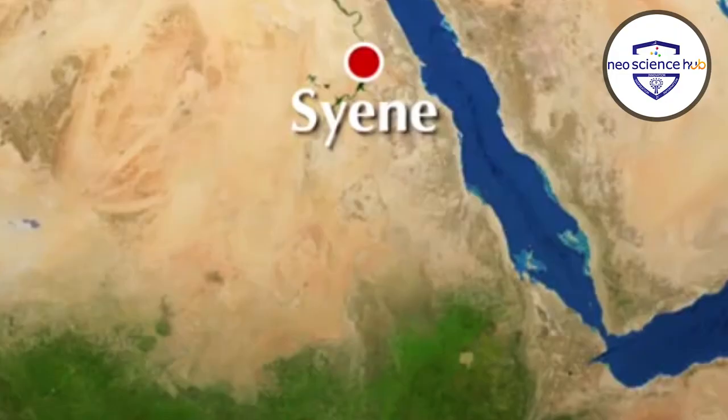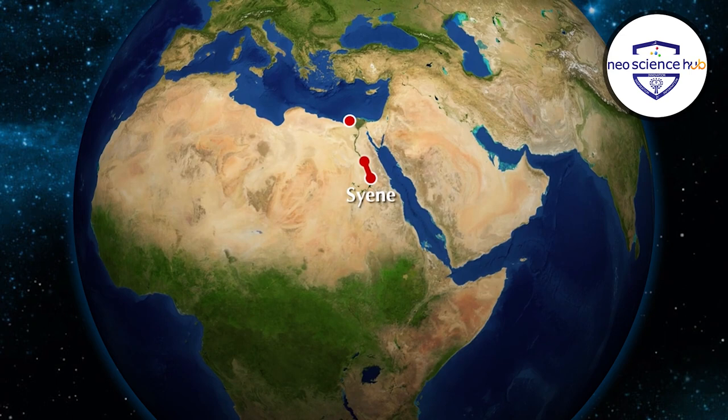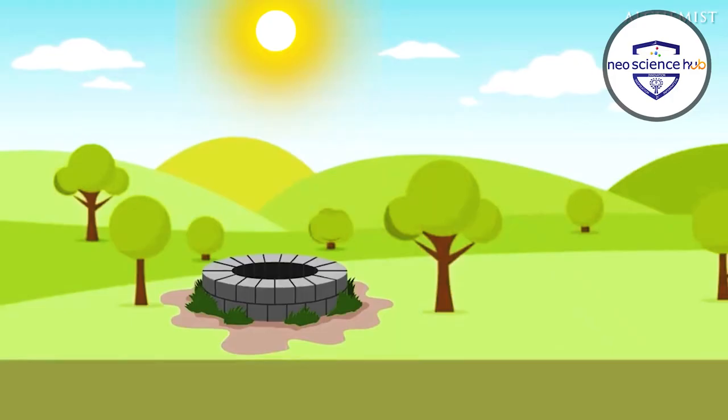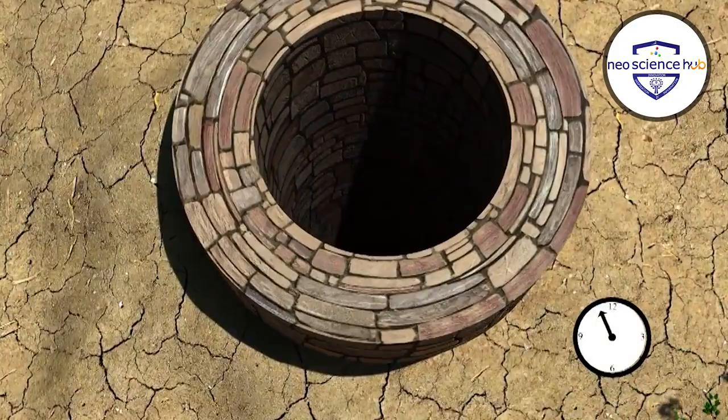In Saini, a city to the south of Alexandria, the sun cast no vertical shadows at noon on summer solstice.